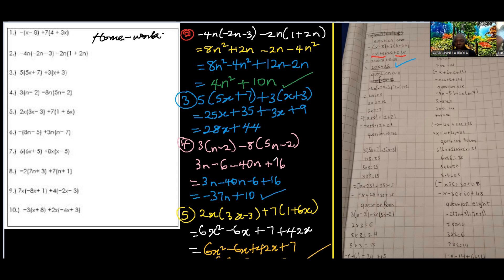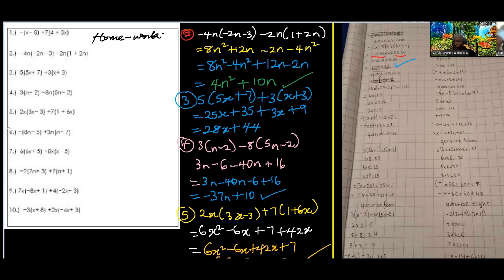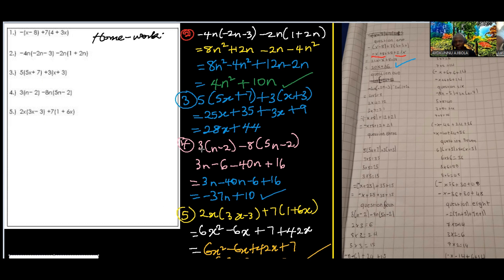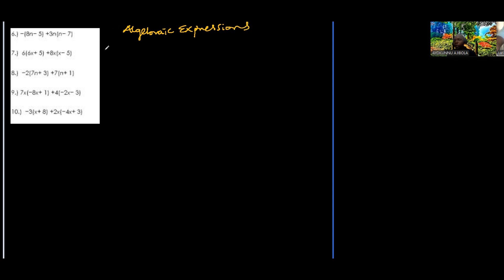Let's move to number 6 — this is still a simplifying algebraic expressions problem. Number 6 says: negative into 8n minus 5, plus 3n into n minus 7. Please concentrate.